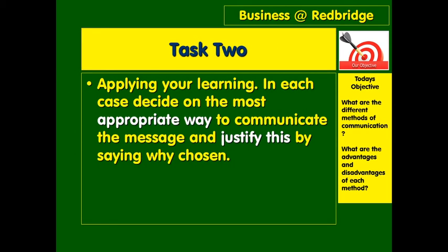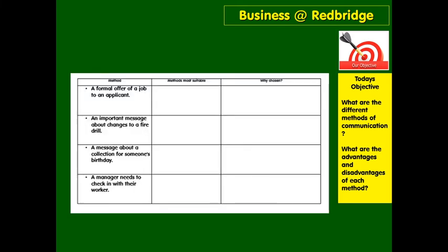The next task won't take more than five minutes. Think about each of those different forms of communication and note down the methods you think are most suitable for these four scenarios: a formal offer of a job to an applicant; an important message about changes to a fire drill; a message about a collection for someone's birthday; or a manager needing to check in with their worker. What is the most suitable method and why? Some are more suitable than others. Pause the video and have a go.